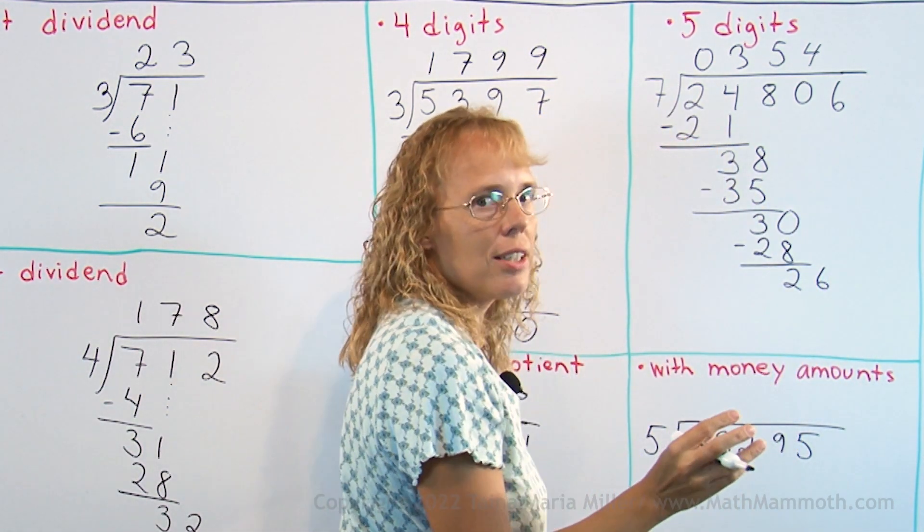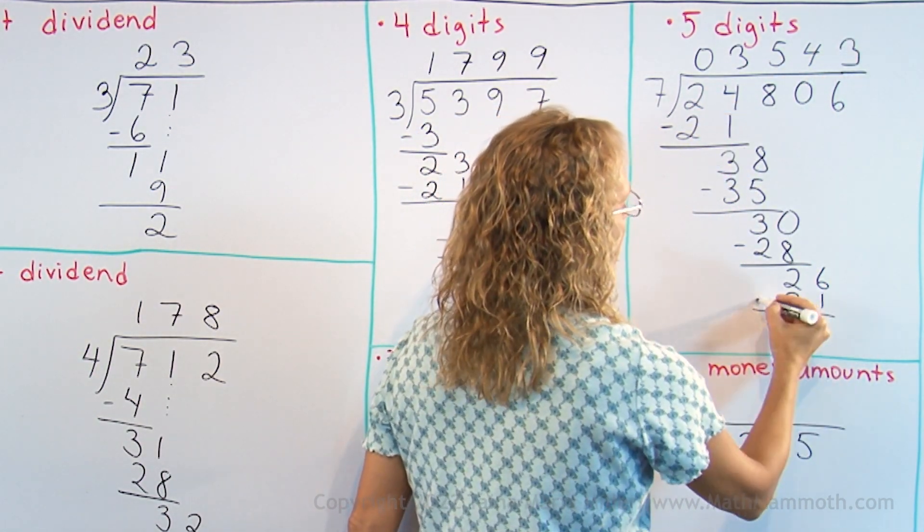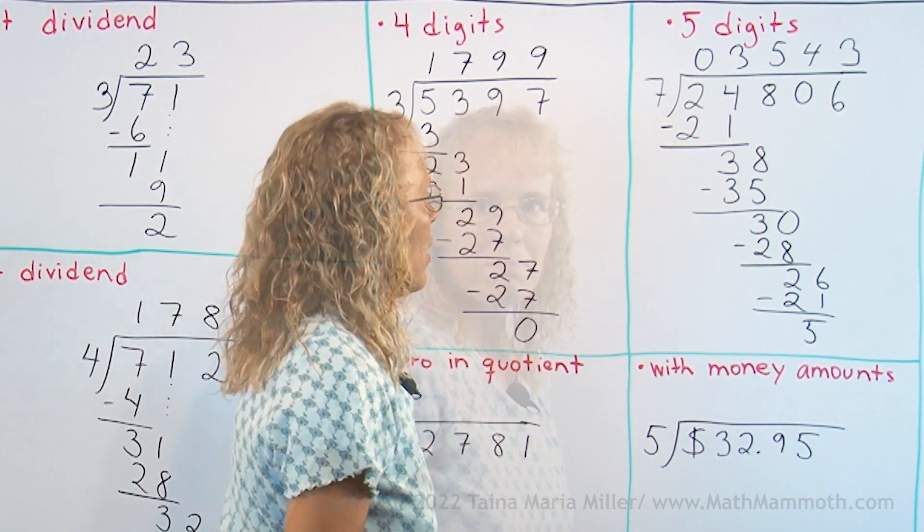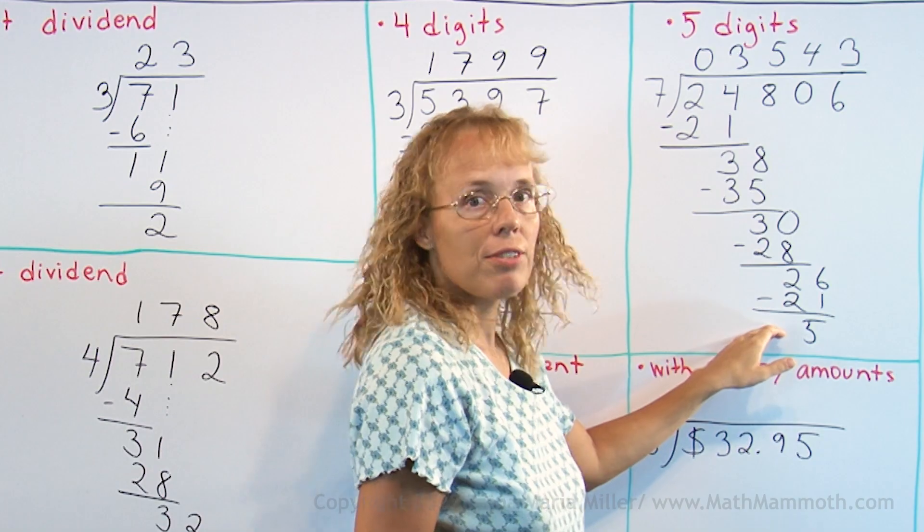And then 7 goes to 26, 3 times. 3 times 7, 21, subtract, 5. And 5 is our final remainder. The answer is 3543, remainder 5. So now, we're going to cover.